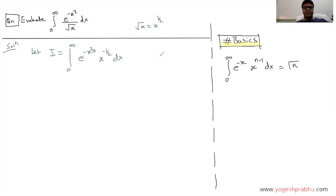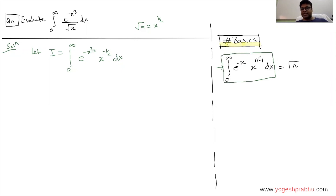Once you get the integral in this form, you should know this basic formula: if your integral is of the type where limits go from zero to infinity of e raised to minus x, times x raised to n minus 1 dx, this is a standard integral and the answer is always gamma of n.